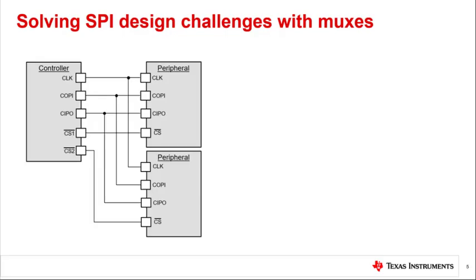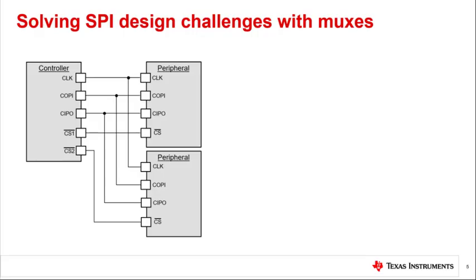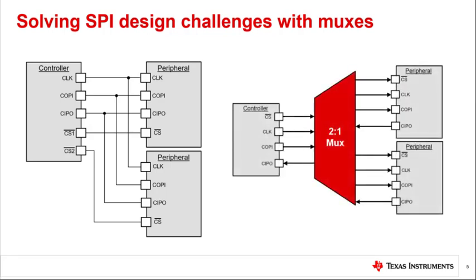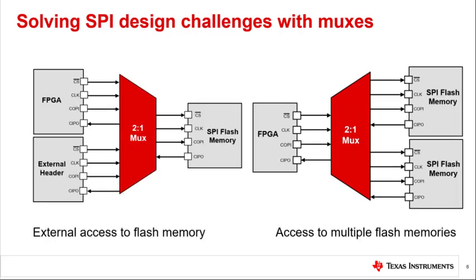As mentioned before, SPI protocol allows for direct connections from controllers to multiple peripheral devices. However, adding too many followers to this direct connection will increase bus capacitance and the rise and fall time of the signal. Adding a low C-ON MUX to switch between multiple followers will grant more flexibility in systems with only one chip select line while decreasing bus capacitance. MUXs may be used to select between multiple internal or external memory banks, as shown here.